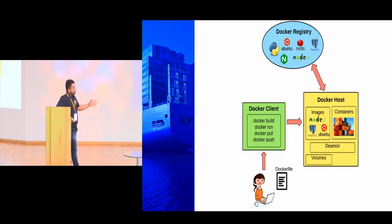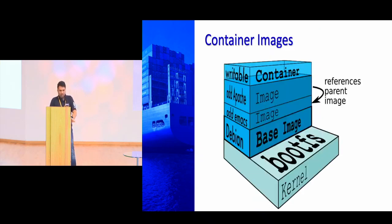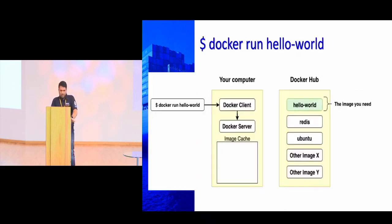Every Docker installation has two components: the client and the Docker daemon, which is the Docker host — or Docker service. There's a third service which is the registry, which could be Docker Hub or any private registry. When we build a Dockerfile, the image we get is a single file containing all the dependencies and configuration required to run that particular application. It has its own bootfs, its own base image, and the instructions you add on top.